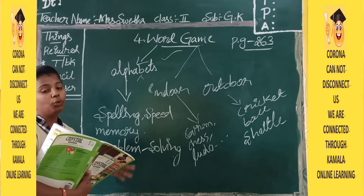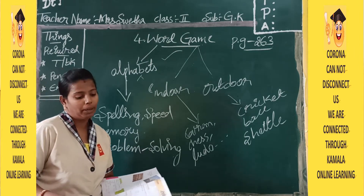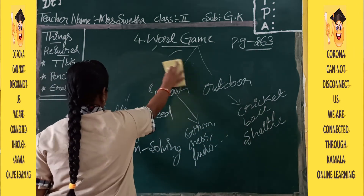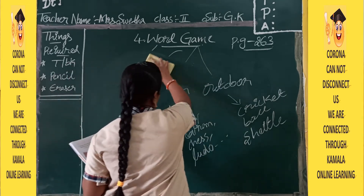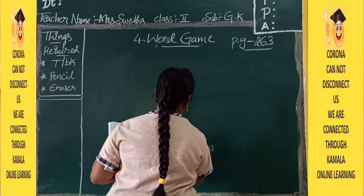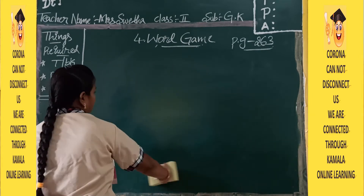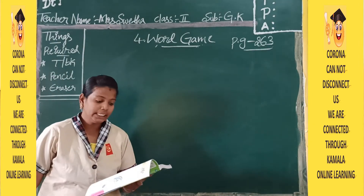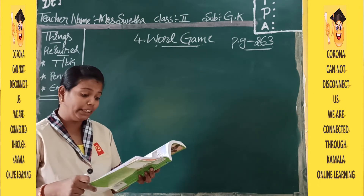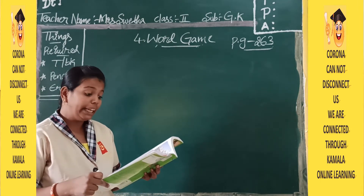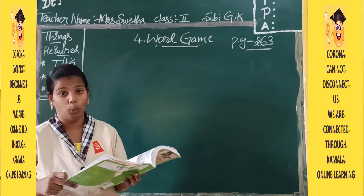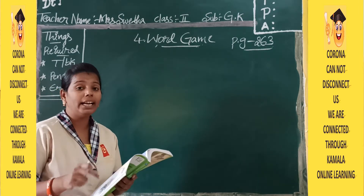Now let us move into our writing part. Before entering into the writing part you have a warm-up here: Name the 7 colors of the rainbow.